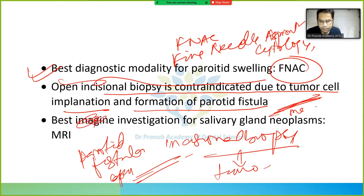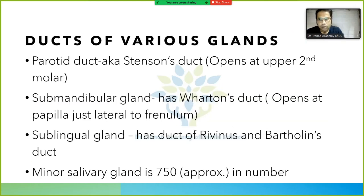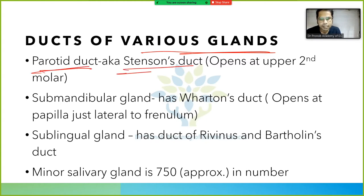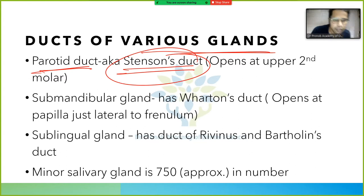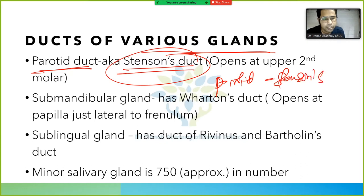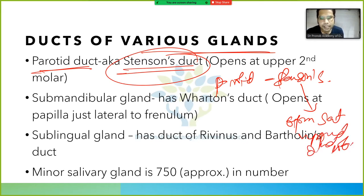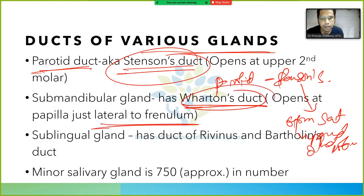The best investigation for salivary gland neoplasm is MRI. Regarding ducts: the parotid duct is known as Stensen's duct and opens at the upper second molar. The submandibular gland has Wharton's duct, which opens at the papilla just lateral to the frenulum.